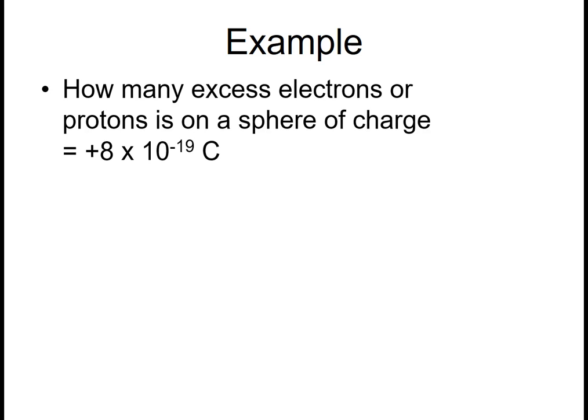Let me give you a quick example problem. Let's say we have a sphere of charge with +8 times 10 to the negative 19 Coulombs, and we want to know how many excess electrons or protons there are. Well, first of all, the positive sign tells us there's extra protons.